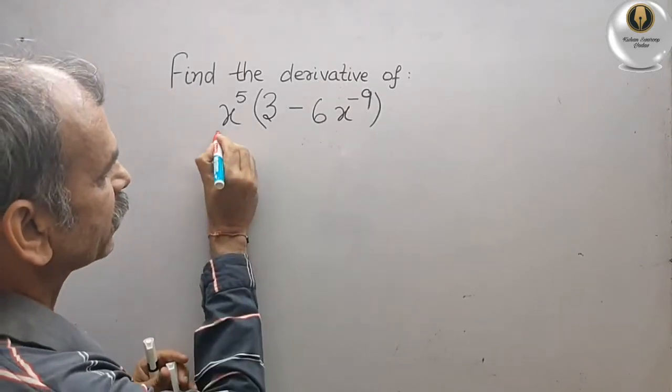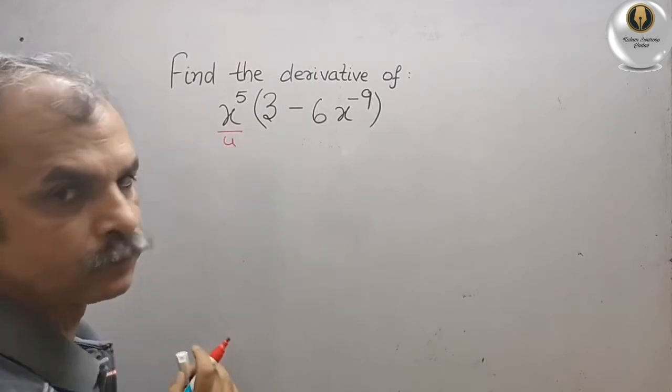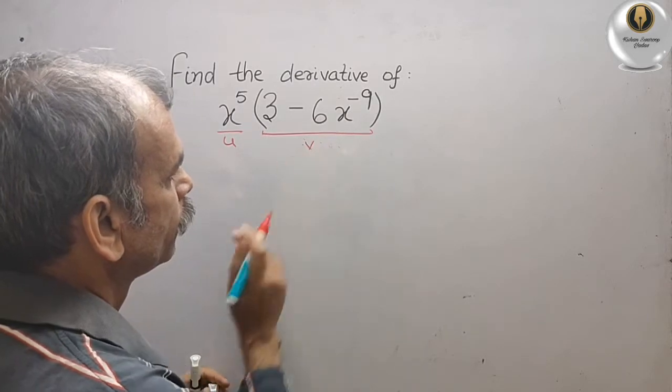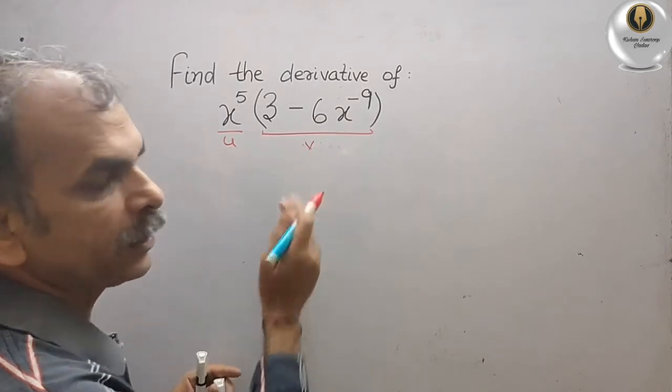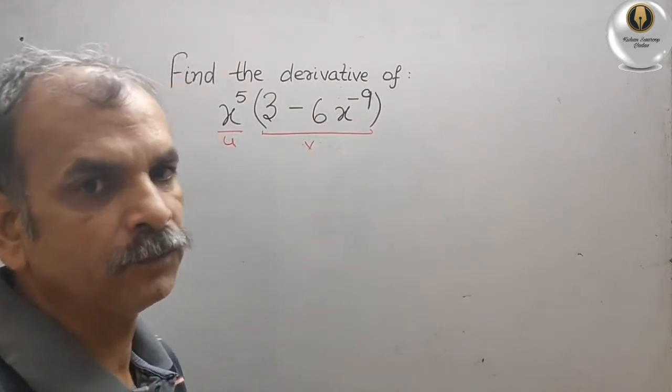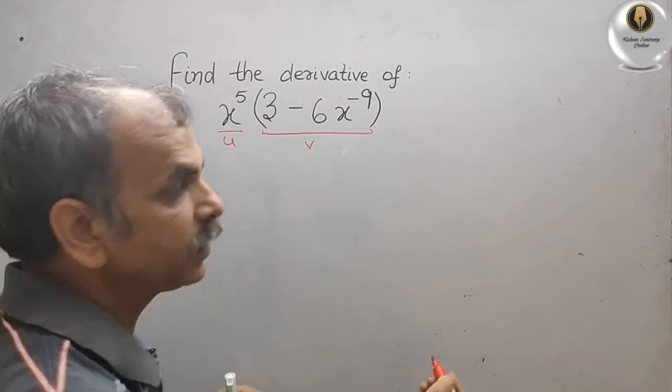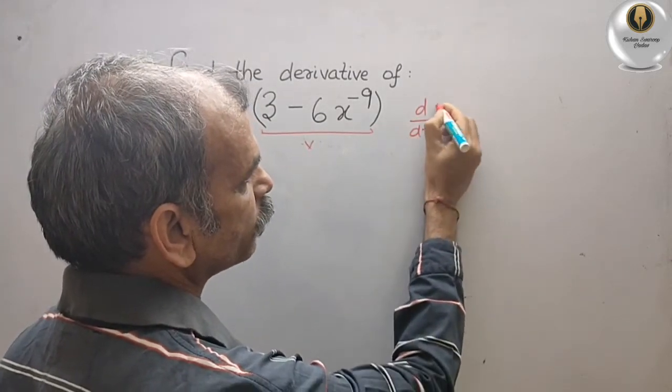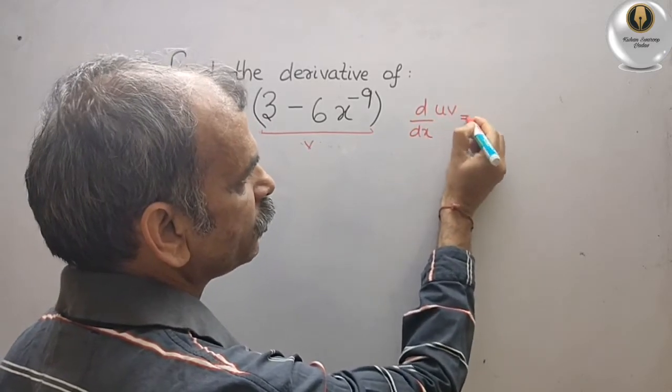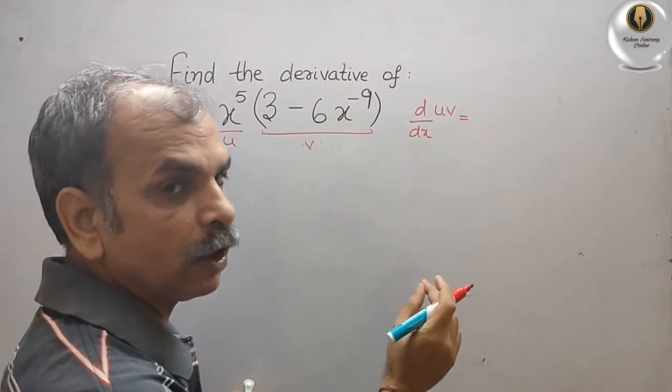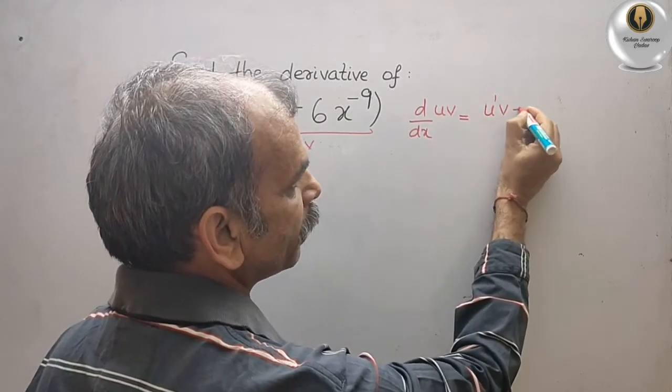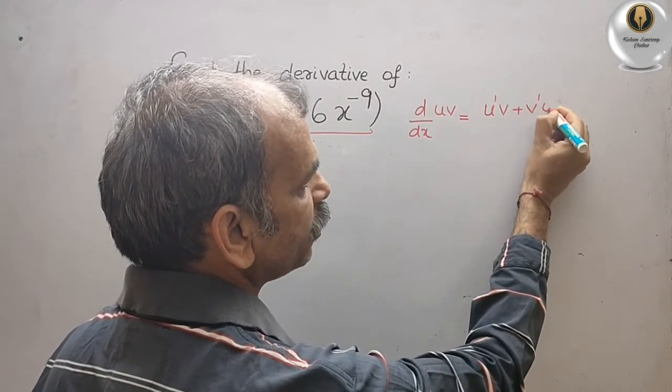First, you can take this as your u and this as your v. So that means u into v. Derivative of u into v is what? We will write d by dx of uv. That is equal to u dash into v plus v dash into u.